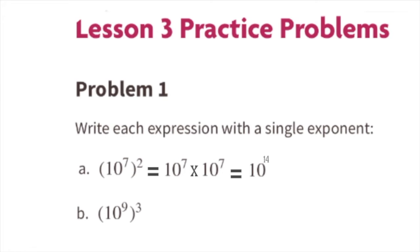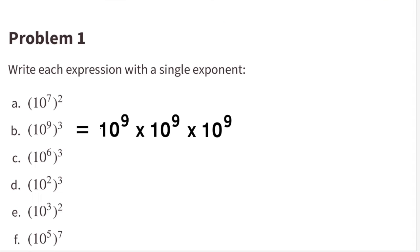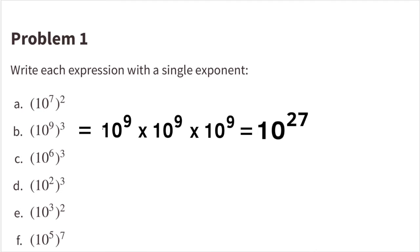Part B: 10 to the 9th, all cubed. That means 10 to the 9th times 10 to the 9th times 10 to the 9th. Exponent 9 plus 9 plus 9 equals exponent 27. So 10 to the 9th power all cubed equals 10 to the power of 27.